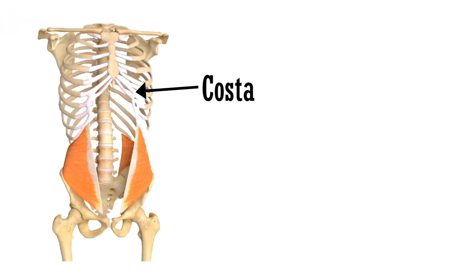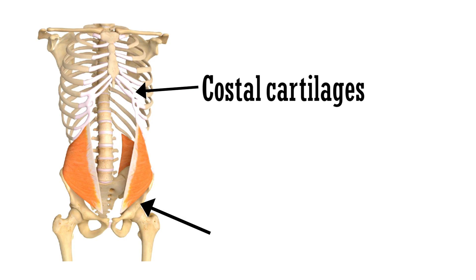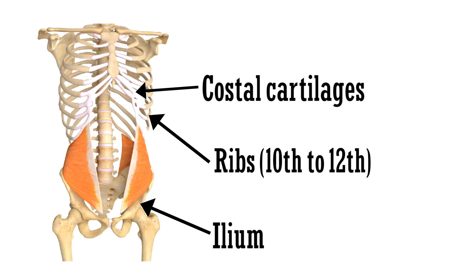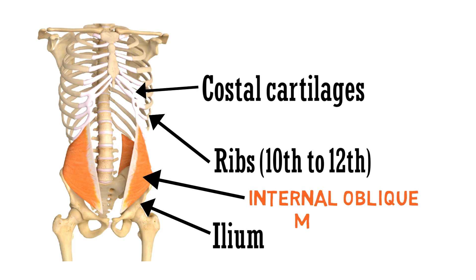The points of origin are the thoracolumbar fascia, iliac crest, and lateral half of the inguinal ligament. And this is the point of insertion, ribs 10 to 12. This muscle is the internal oblique muscle.